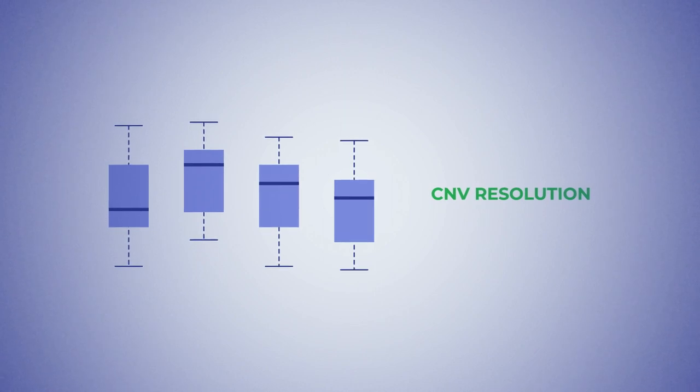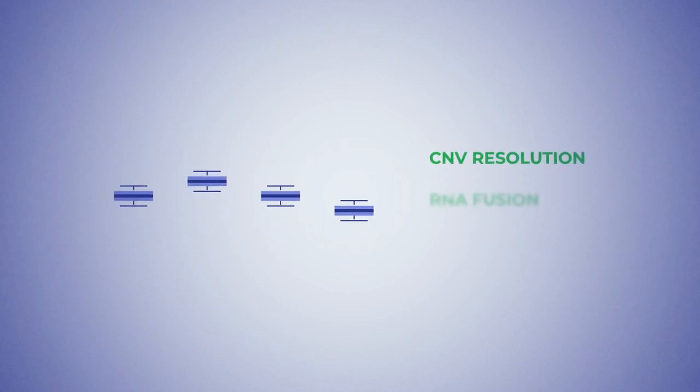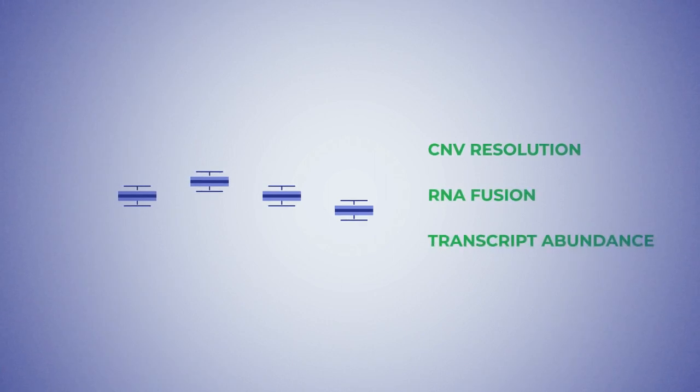CNV resolution is improved, even with the loss of heterozygosity, or LOH, and you can obtain more accurate fusion and transcript abundance measurements with significantly less read depth.